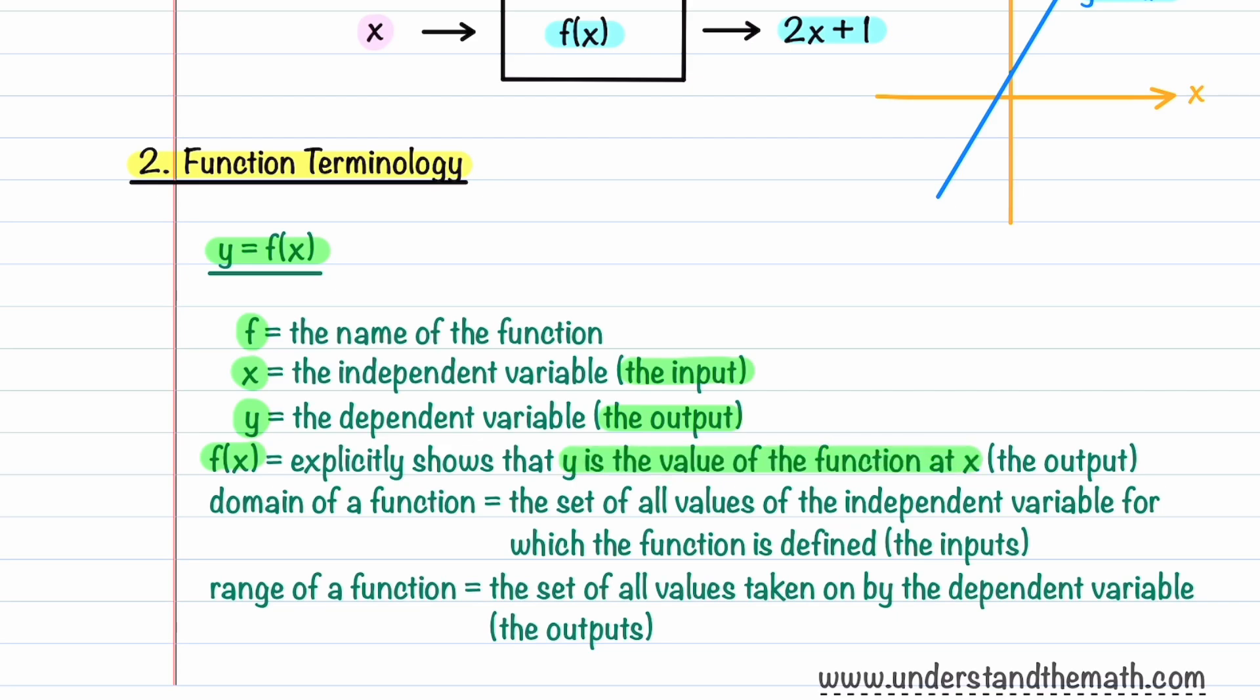The set of all possible inputs is called the domain of a function, and the set of all possible outputs is called the range of the function.